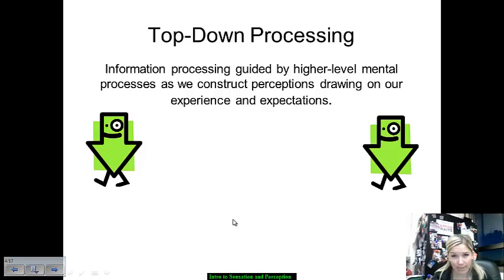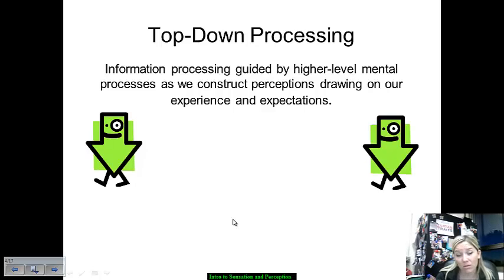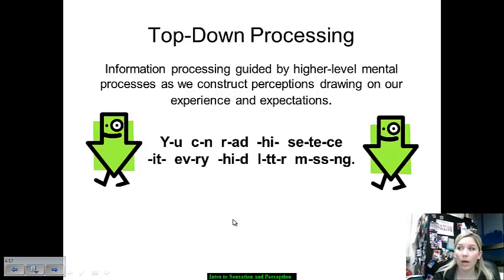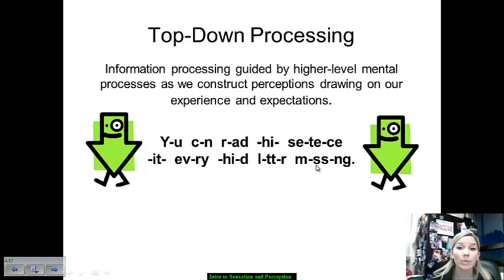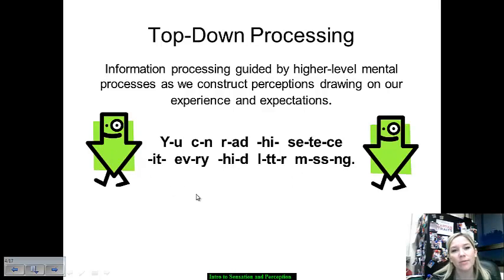Opposite to this is top-down processing. This is when we take things from a more generalized whole — a bigger picture — and we break them down into smaller understandings based on our experiences and our expectations of things. I'd like you to pause this right now and try to figure out what it is that this is saying, because there's something that enables you to construct a perception and an expectation of what this is because of your higher-level mental processes. Pause it, and then when you're ready, keep going.